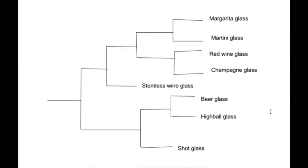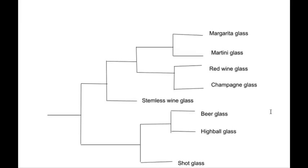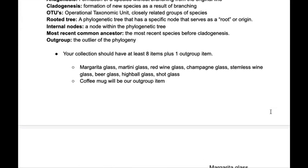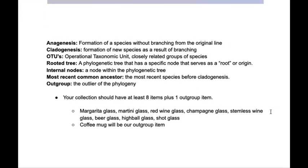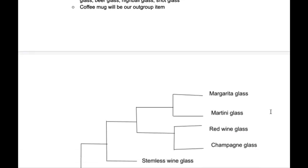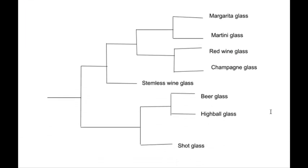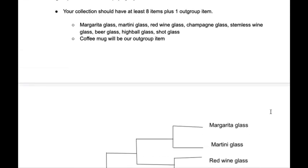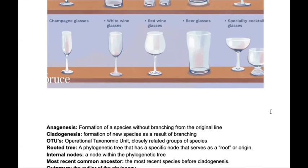You'll see that the margarita and martini glasses are on the top of the phylogenetic tree, making them the most closely related. Next are the red wine glasses and champagne glasses. All four of these are somewhat related, which puts them at the top of the phylogenetic tree together, but have different branches because of the shape of the top of their glasses. The stemless wine glass is the most unrelated in the group of five, because it does not have a stem.